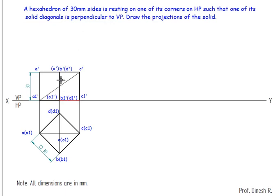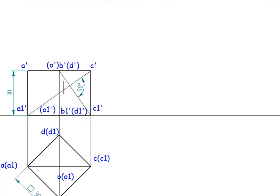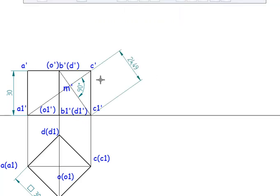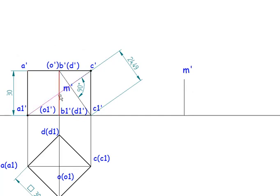I'm going to draw the solid diagonal. The cube should be resting on corner C1, and I need to make this solid diagonal parallel to HP and also parallel to VP, so that in the third step I can make it perpendicular to VP. I'll draw the line from this point at 90 degrees. Now I'm going to call this reference point M, labeled as M dash.